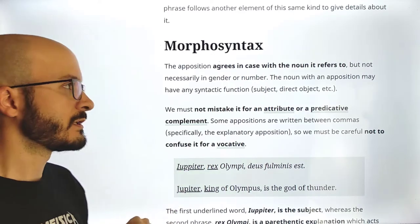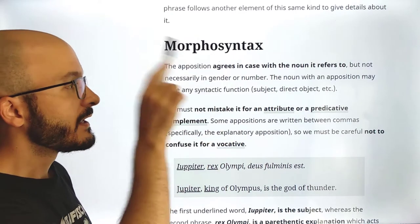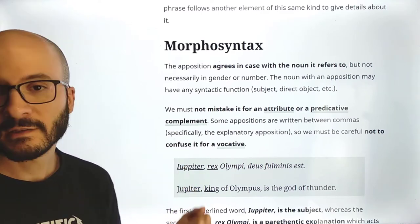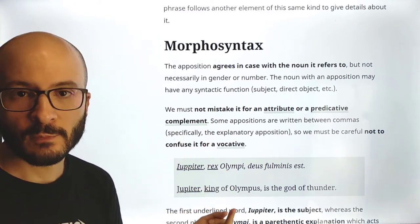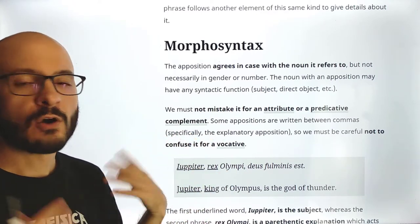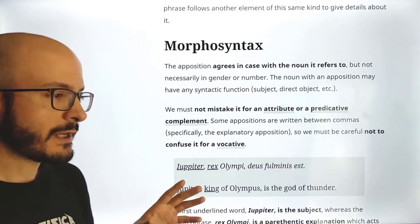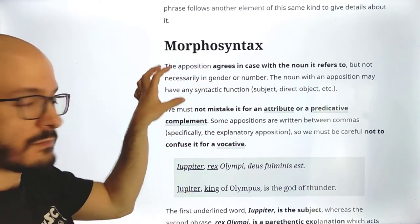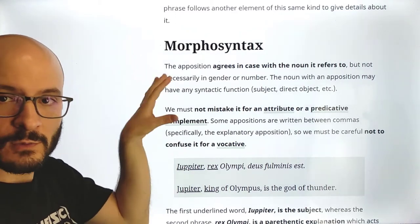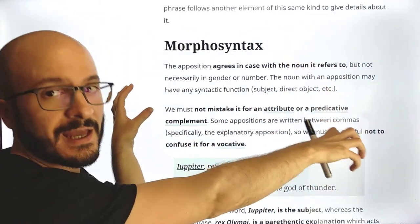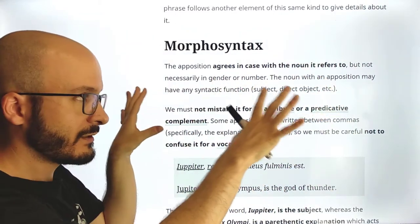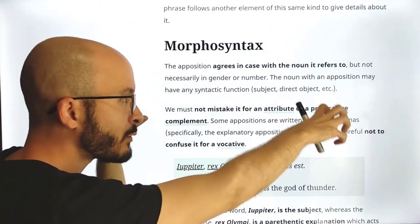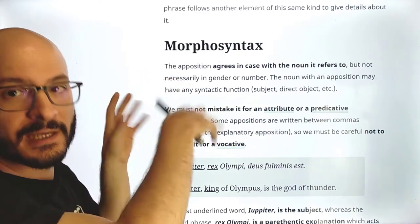We are going to see this with examples. The noun with an apposition may have any syntactic function: subject, direct object, indirect object, adverbial, complement of the noun — whatever. So we can have whatever the noun is — subject, direct object, whatever — and its apposition alongside it.